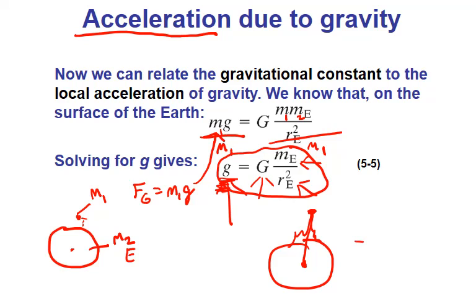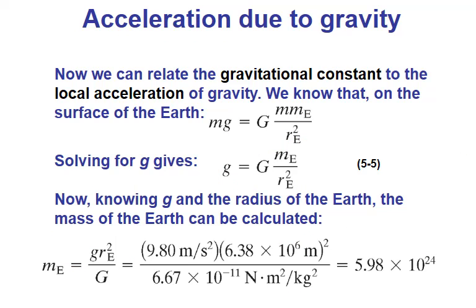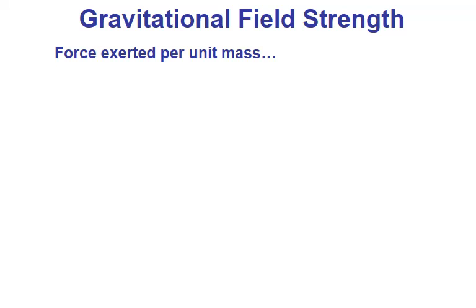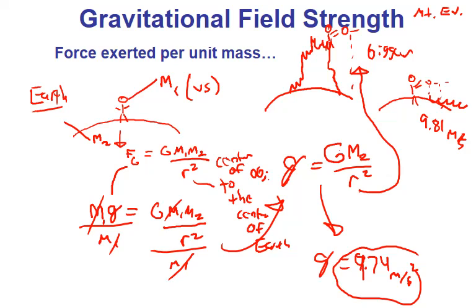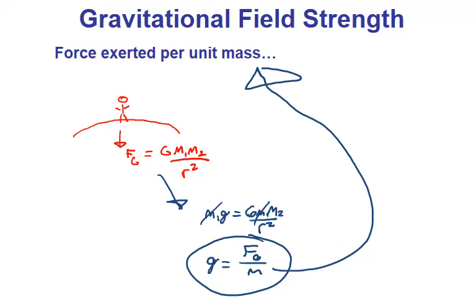On Mount Everest, the acceleration due to gravity may be slightly less than the standard -9.81 m/s² at sea level. Gravitational field strength is the force exerted per unit mass: g = F_gravity / mass = G × M_Earth / r². This is another name for acceleration due to gravity — we find that gravitational value and can multiply it by any mass to get the gravitational force on that object.